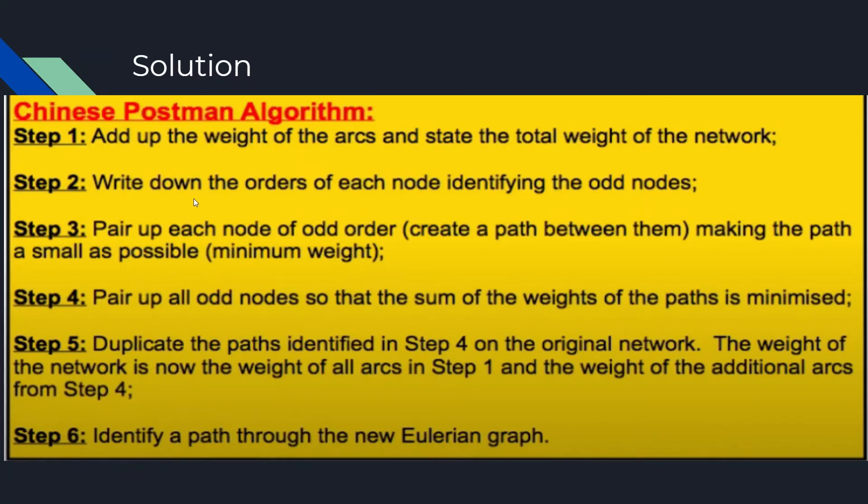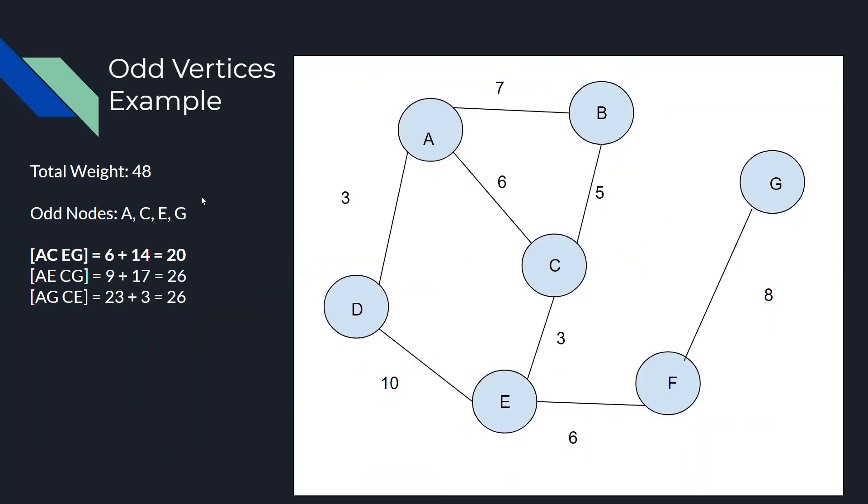Next, step two, write down the orders of each node identifying the odd nodes. So, let's just identify the odd nodes. Those are going to be A, C, E, and G because A has degree 3, C has degree 3, E has degree 3, and G has degree 1.